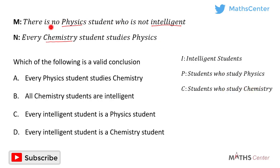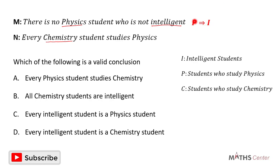The first statement is: there is no physics student who is not intelligent. What it means is that if someone is a physics student, the person is intelligent. So if someone belongs to P, it implies that the person also belongs to I. If someone studies physics, it implies that the person is intelligent.